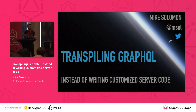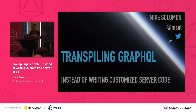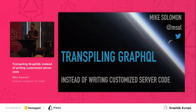Before I jump in, I just want to clear up the meaning of transpiling. Transpiling just means that we're taking some source code — in this case, it will be a GraphQL query — and we're going to translate it into some different source code. Today, that will be kind of JavaScript-flavored pseudocode.